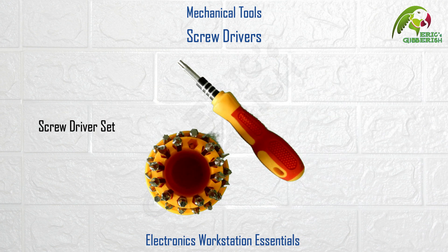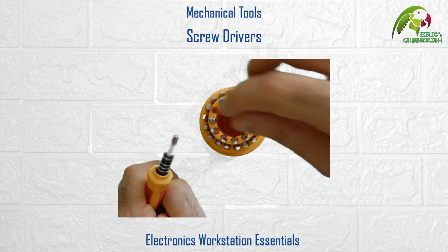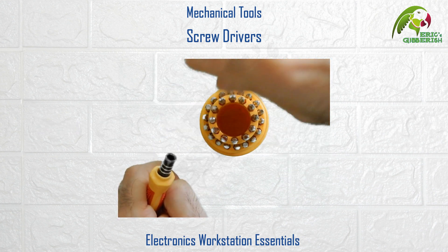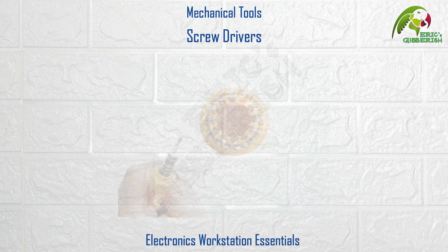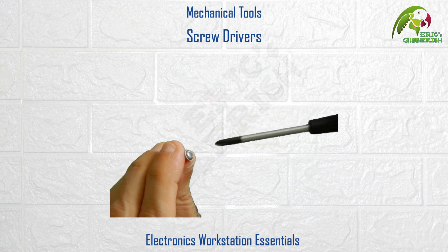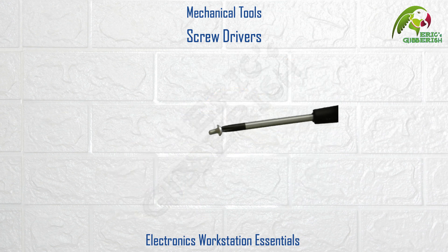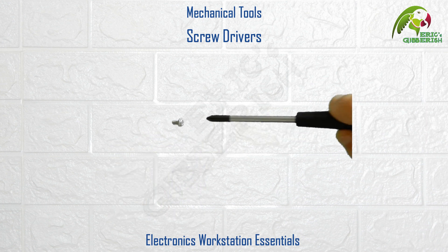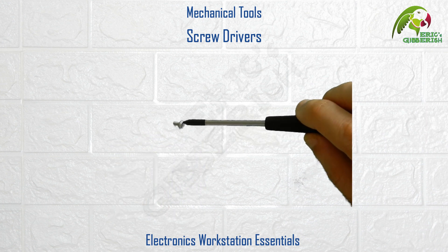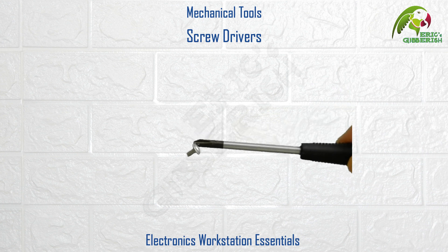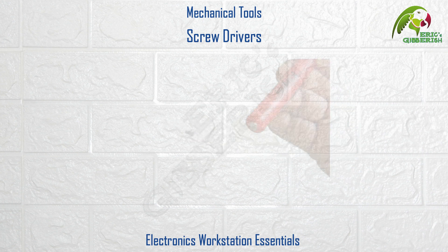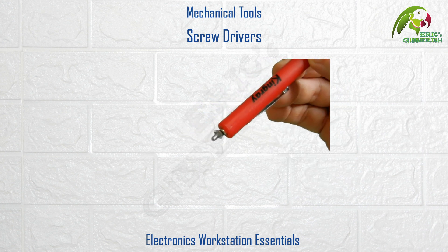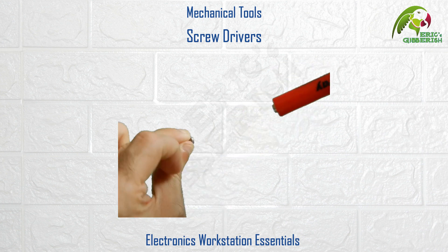One would usually also keep in their toolkit a screwdriver set in case other uncommon types and sizes of screwdriver heads are required. Screwdrivers with magnetic heads are also very useful to align the screw to the screw hole during fitment. They also assist at fetching or picking up fallen or dropped screws. Some even have handles with magnetic ends, again helping the same purpose.